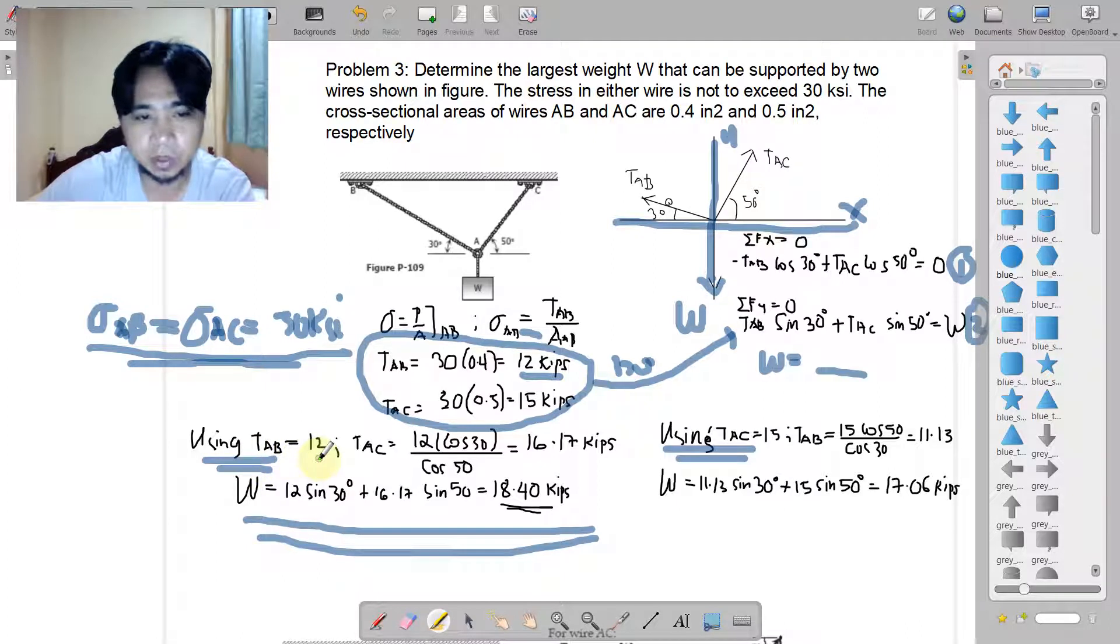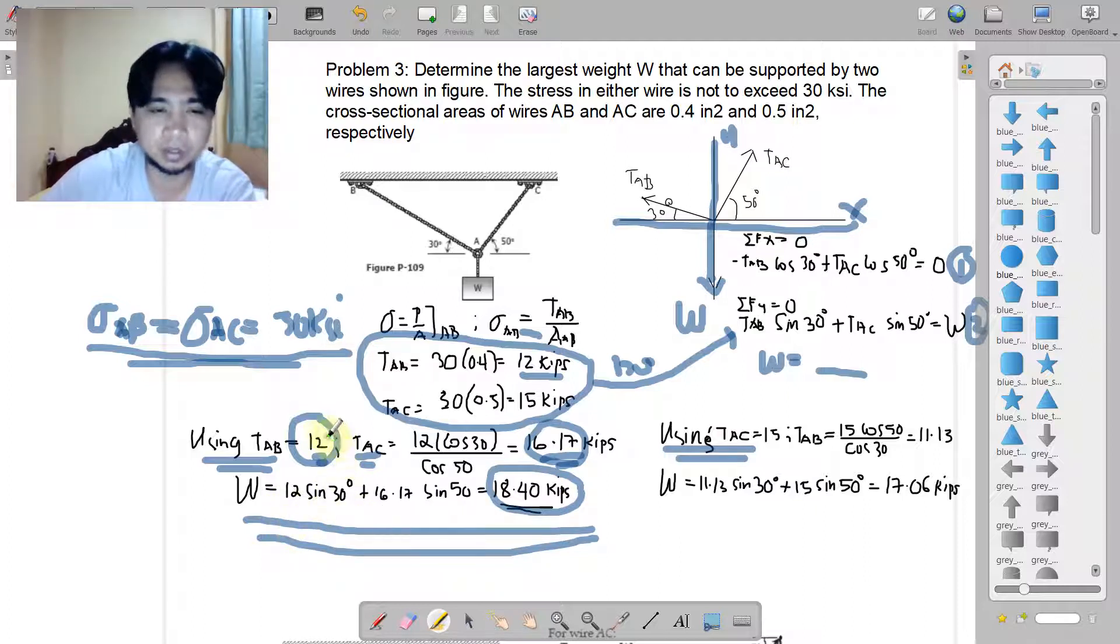First, using TAB. TAB here is 12. So what is the corresponding TAC if our TAB is 12? We compute this TAC from equation 1. We have 12 cosine 30 divided by cosine 50, so the pair of TAB is a TAC of 16.17. This 12 and 16.17 values will now be used on equation 2 to solve for W. Substituting these two values on equation 2, we come up with 18.4 kips W.